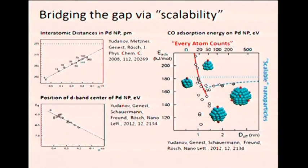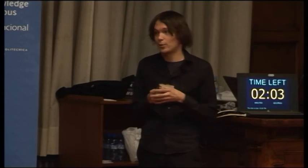Even with these methods, we can calculate systems of around 400 atoms, while experimental systems are about 100 times bigger. But luckily, the properties of nanoparticles seem to depend linearly on the inverse radius of the nanoparticles, like interatomic distances or positions of the D-band center in densities of states. For more chemical properties the behavior is more complicated — CO absorption energies fluctuate strongly at small sizes, but when nanoparticles are bigger than 100 atoms they start to behave smoothly, allowing us to extrapolate results to experimentally observed sizes.